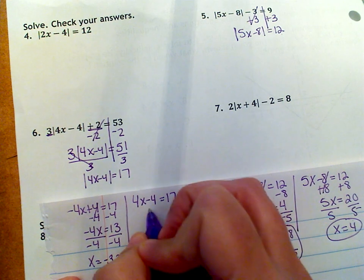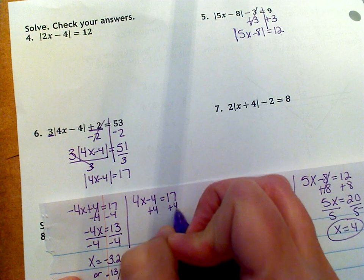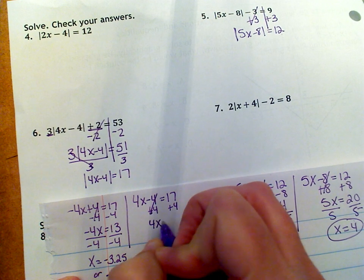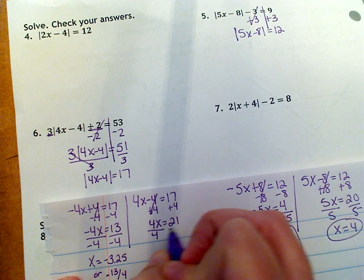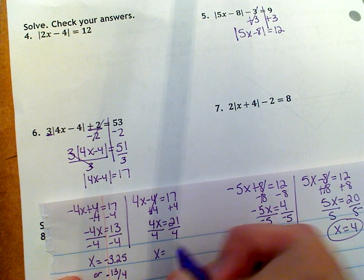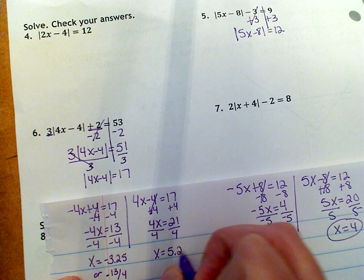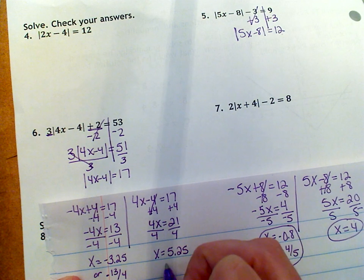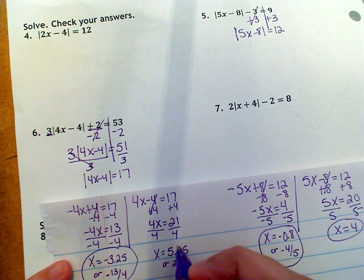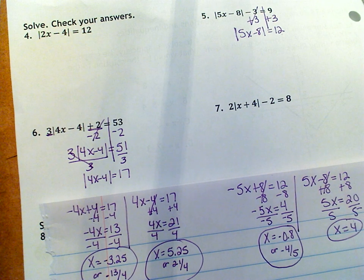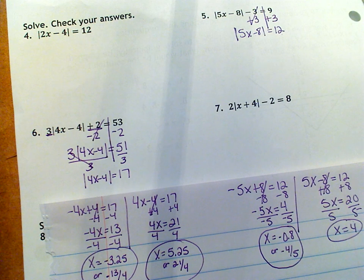All right. On the other side, we're going to add four. So this gives me four X equals 21 and divide by four. So X equals 5.25, or you can leave it as 21 over four. So either one of these, because it terminates, it would be okay to leave as a decimal.